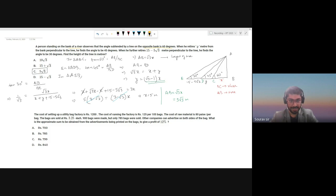It's from profit and loss. It's quite a lengthy sum with a lot of calculations, so follow carefully. The cost of setting up a utility bag factory is 1200. Let us keep track of the costs. Setup takes 1200. Then the cost of running the factory, the machines and wages, is 125 per 105 bags.